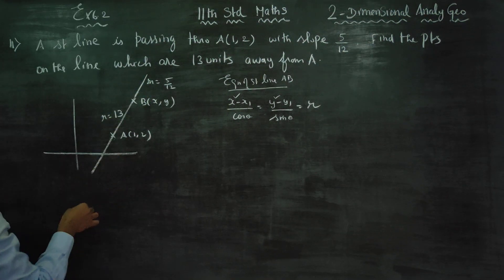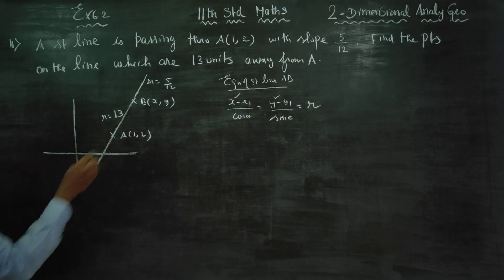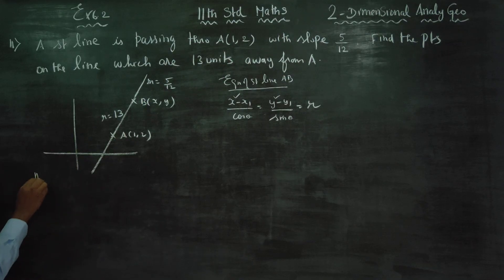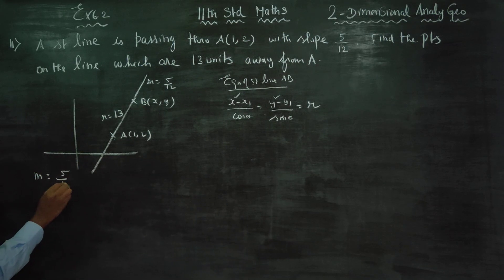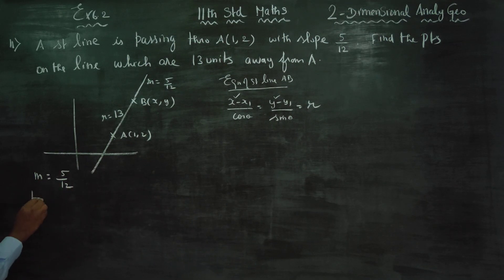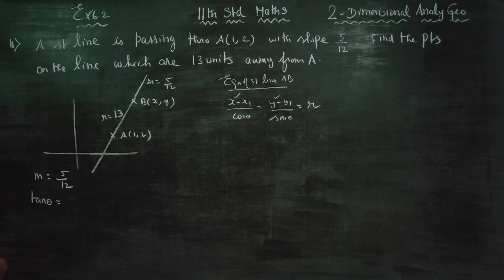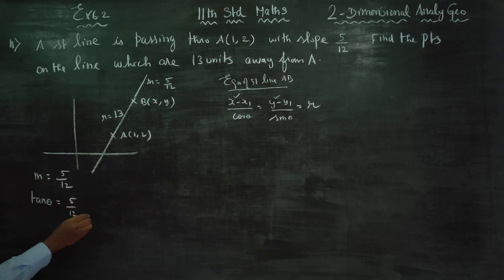We are given the slope. Slope M is equal to 5 by 12. What is the meaning of slope? Slope is tan theta. So tan theta is equal to 5 by 12.